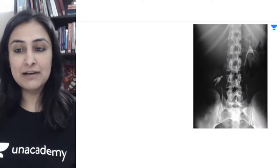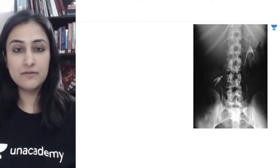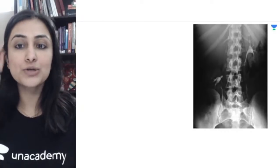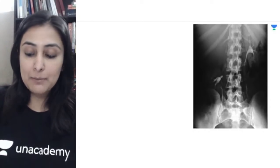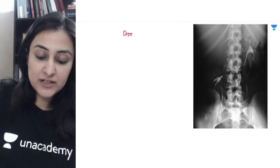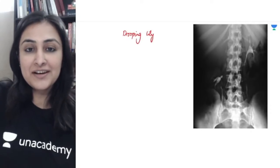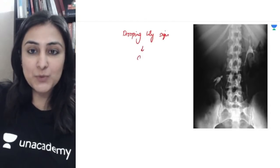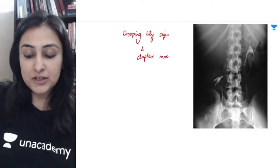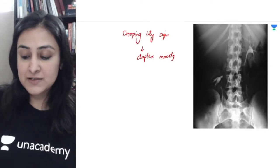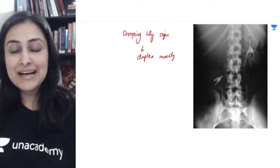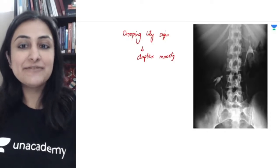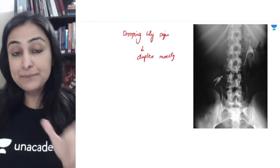The next image — tell me the sign. This is something every person attempting PG will know. The image itself tells you it's looking like a drooping lily. The drooping lily sign is seen with a duplex moiety. You can see very clearly on the right side that this pelvicocalyceal system is looking like a drooping lily, falling down and drooping.